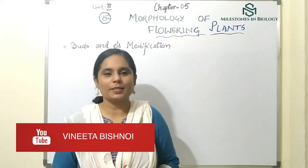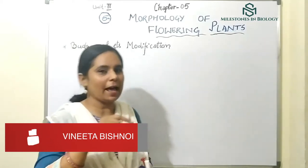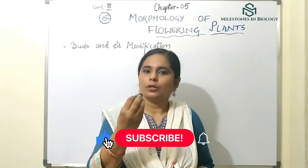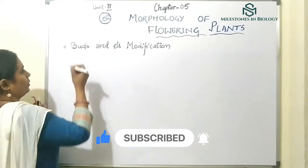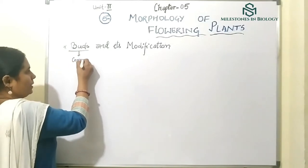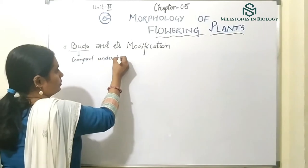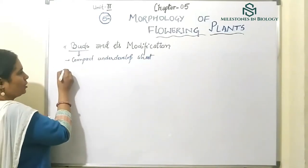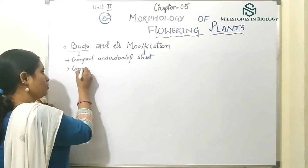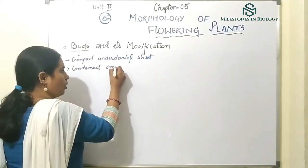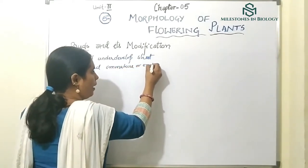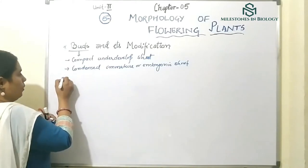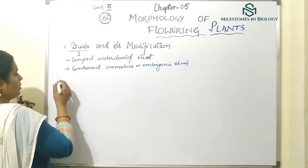Hello everyone, welcome to my channel once again. Today's topic is buds and their modification. Buds are condensed, immature shoots. The definition: buds are compact, underdeveloped, or embryonic shoots. It is a part of the shoot system.